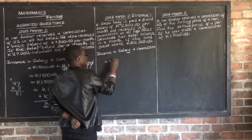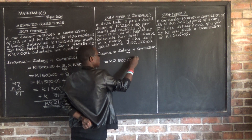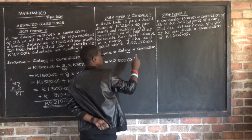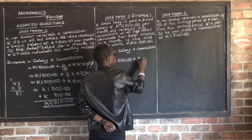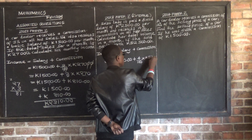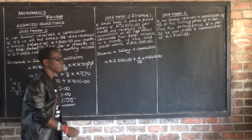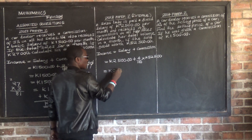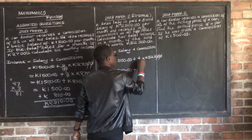Her salary was $2,500 — that's fixed. For the commission, she was given 4%, so we calculate: 4 over 100 multiplied by $52,500. We can then cancel zeros from the 100 and from 52,500.